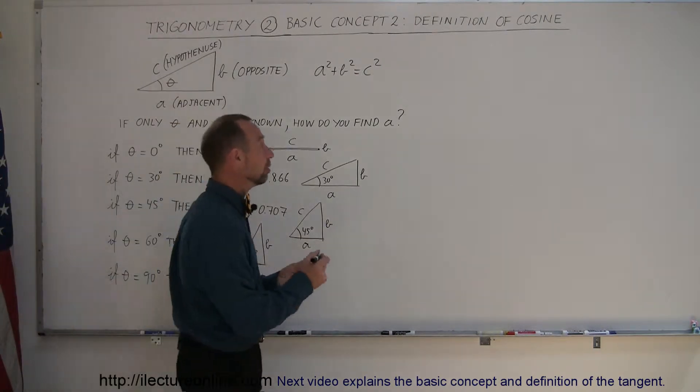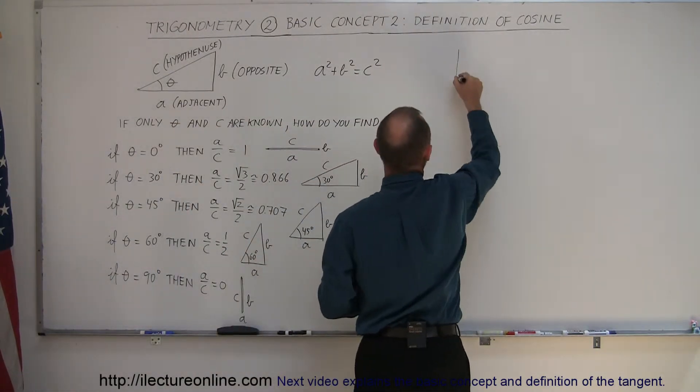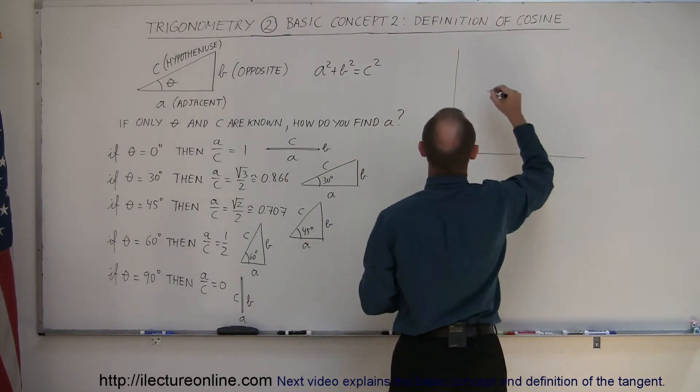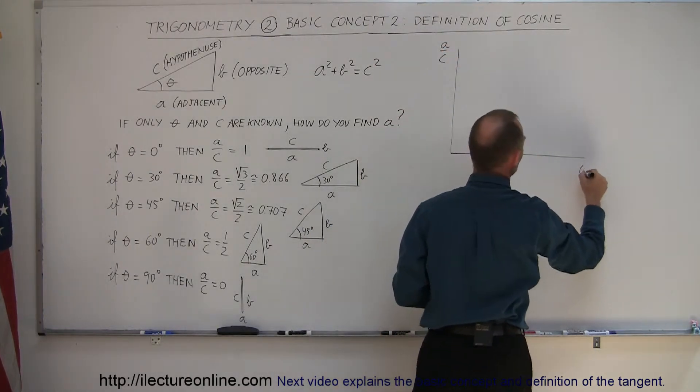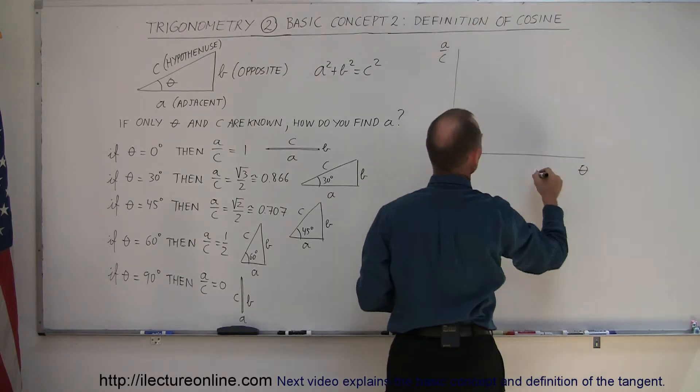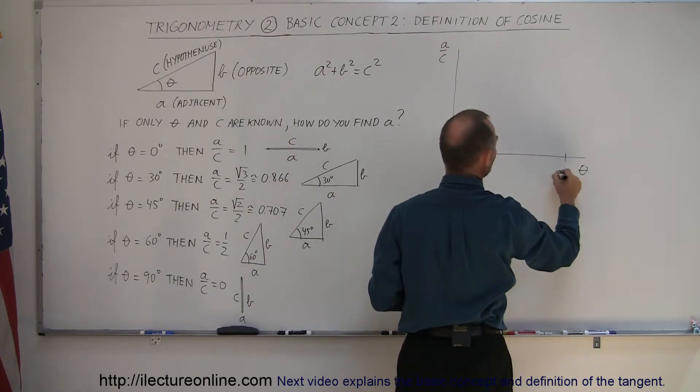Now if we were to write that into a function, a relationship, so let's draw the relationship here, and let's say that this is the ratio of a over c, and this is the angle theta. Let's say when theta is equal to 90 degrees, then the ratio of a over c is zero.